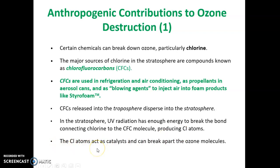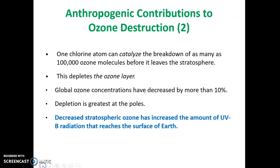These chlorine atoms act as catalysts. A catalyst is a chemical that causes a reaction to take place over and over again without being used up itself. The chlorine atoms break apart an ozone molecule but are not consumed, so they move on to break apart another ozone molecule, and another, and another. One chlorine atom can catalyze the breakdown of as many as 100,000 ozone molecules before it leaves the stratosphere.